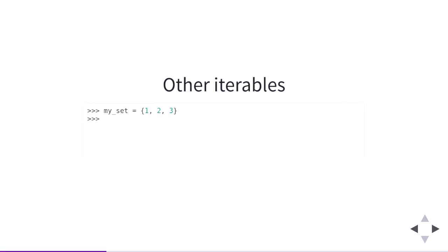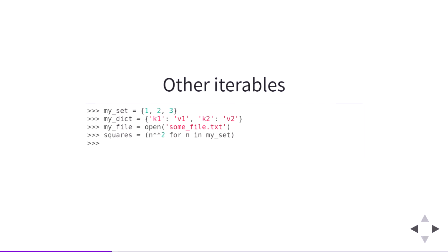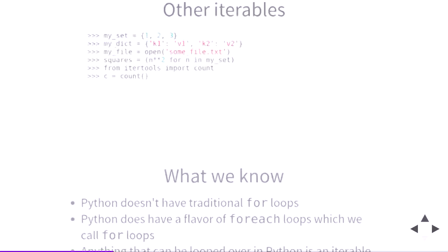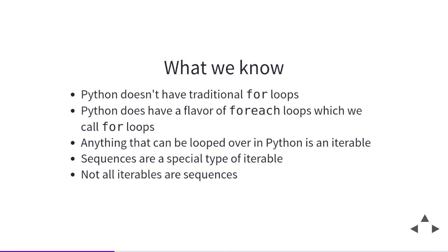Sets are iterables. Dictionaries are iterables. Files are iterables. Generators are iterables. We even have infinitely long iterables — count in the itertools module is an infinitely long iterable. None of these things are sequences, but they are all iterables. Sequences are just one type of iterable, but we have many other types of iterables in Python.